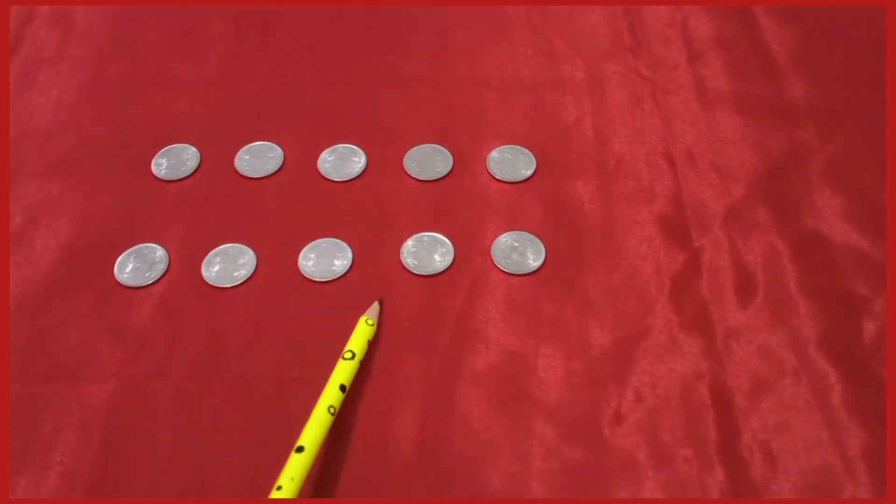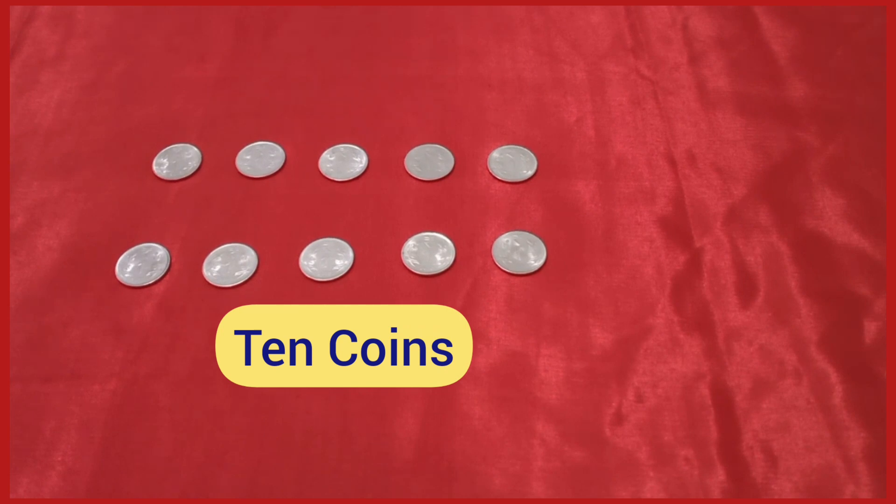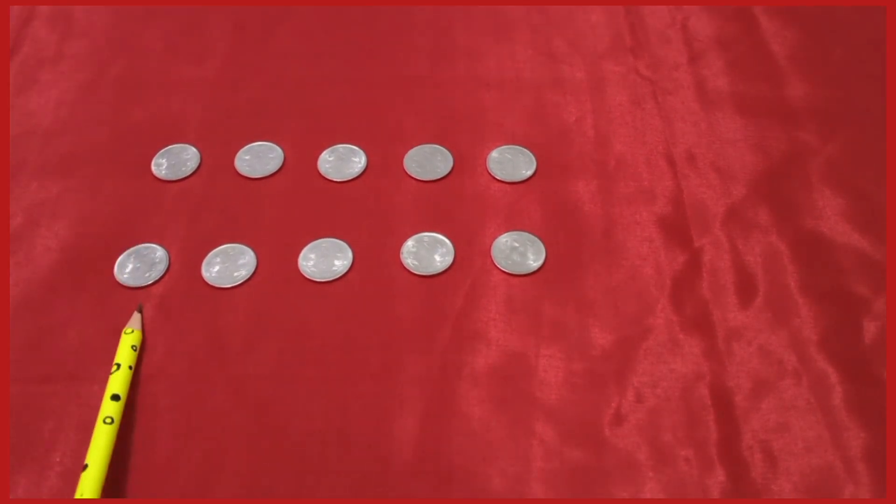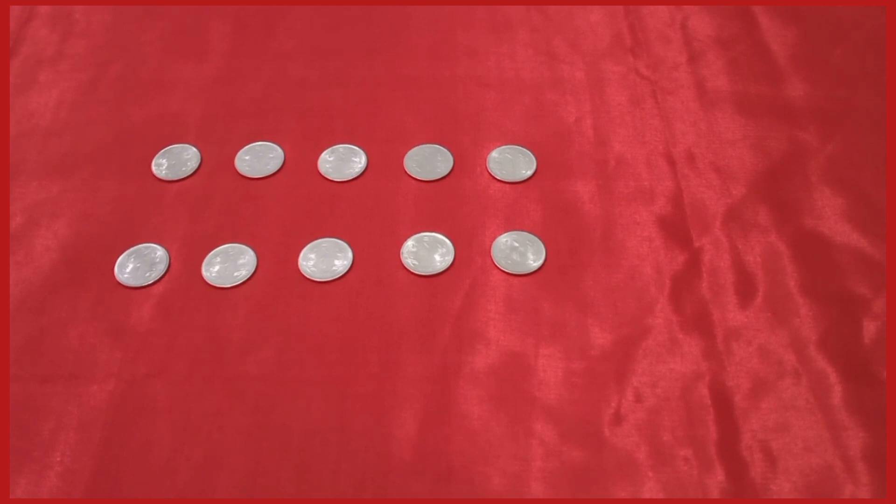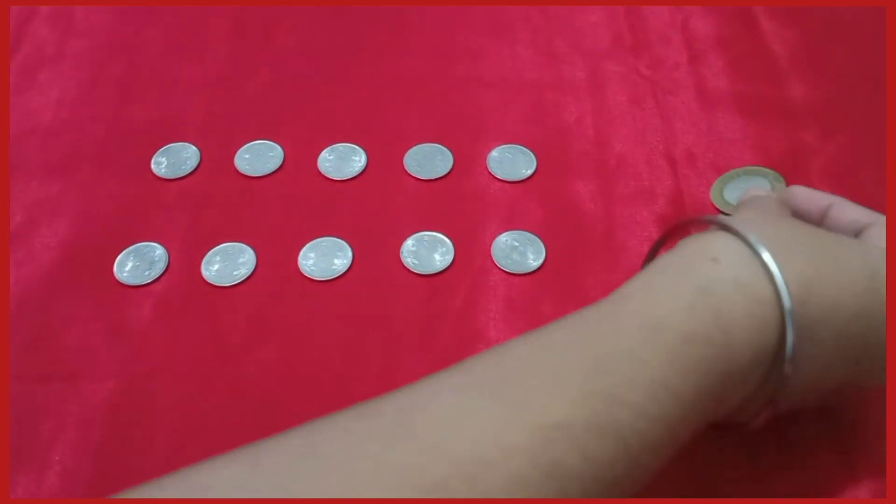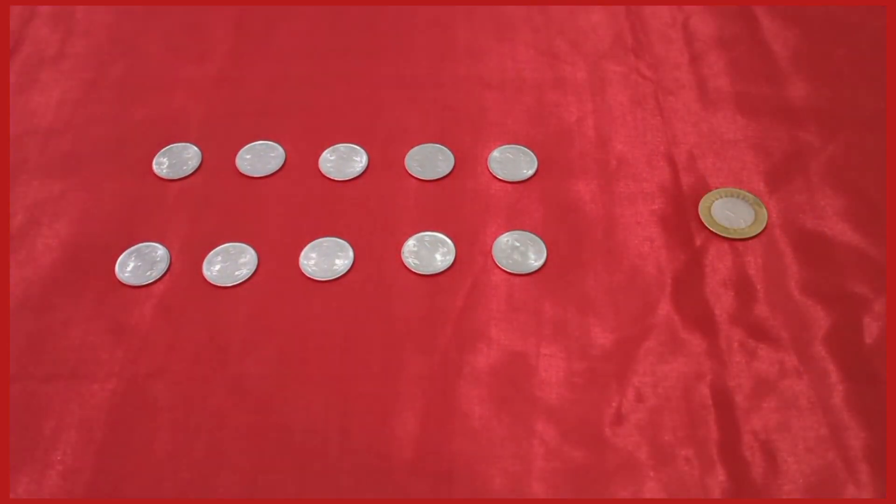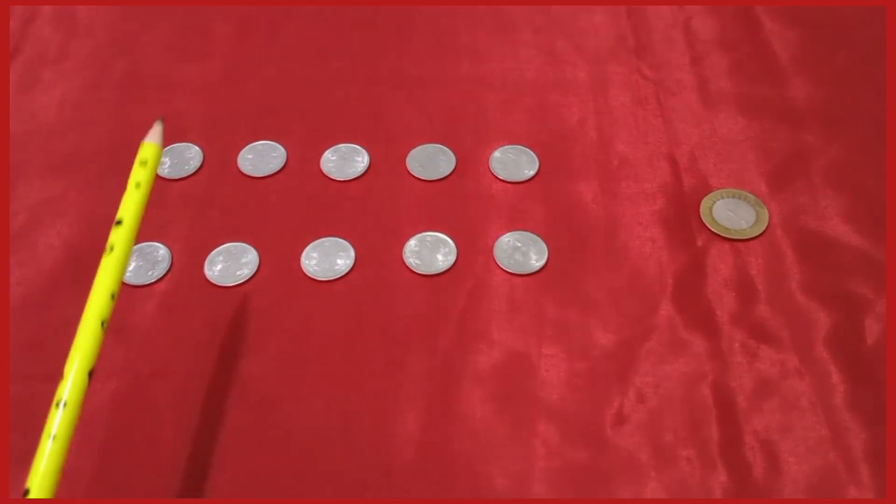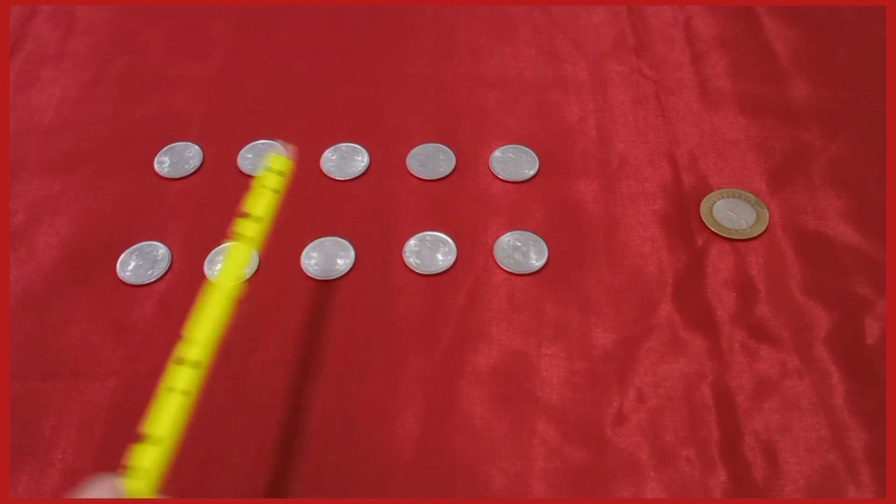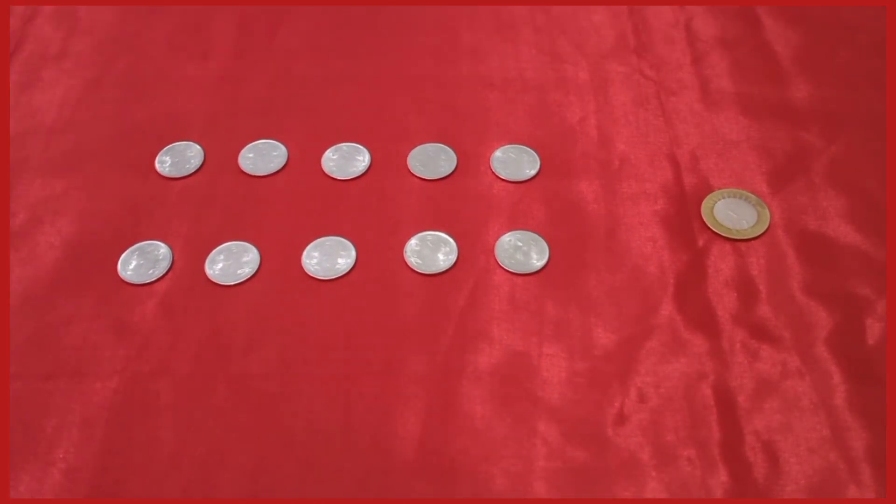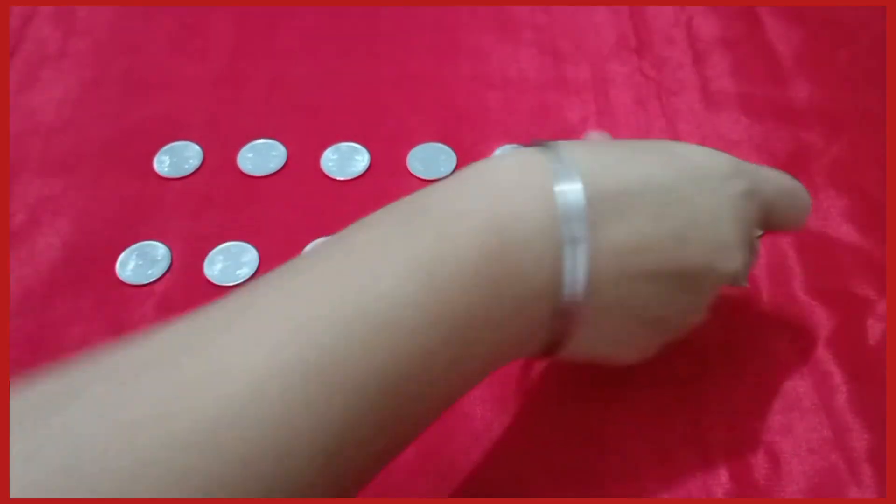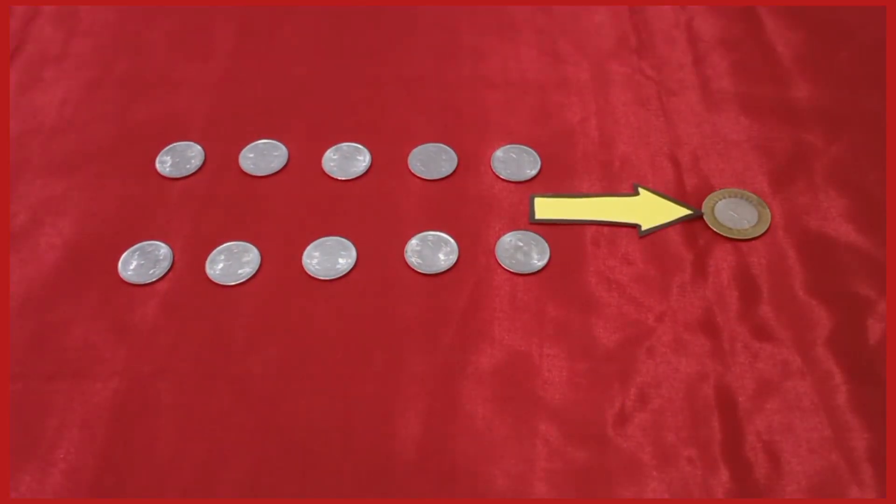Yes, we have 10 coins of 1 rupee and the value of 10 one-rupee coins is equal to 1 ten-rupee coin. So we can take a greater value coin instead of the small value coins, and here 10 one-rupee coins are same as 1 ten-rupee coin.